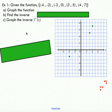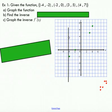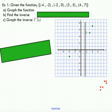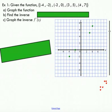Let's look at an example. I've given you a function here — just a set of points. You can see this is a function; it does pass the vertical line test. Remember, if you take a vertical line and pass it through your function, there should be no point where there are two points on that vertical line. It does pass the vertical line test, so it is a function. I've graphed it for you already.